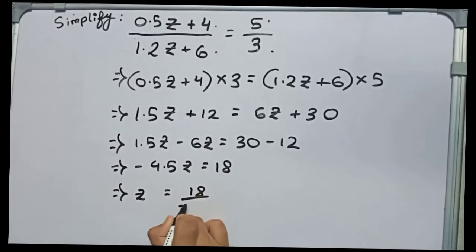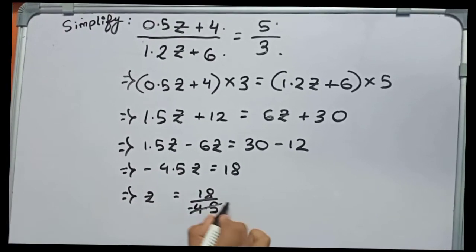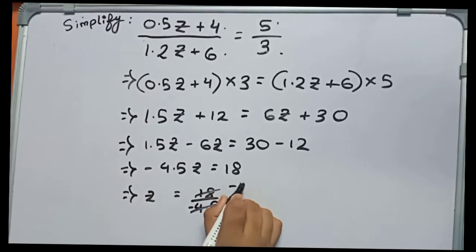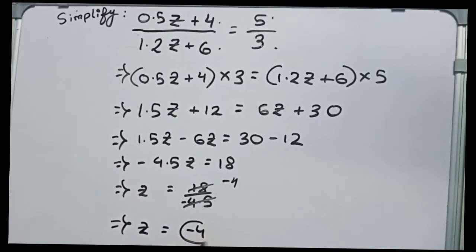We can divide 18 by 4.5 directly. It will become minus 4, or z equals to minus 4. So this is our final answer.